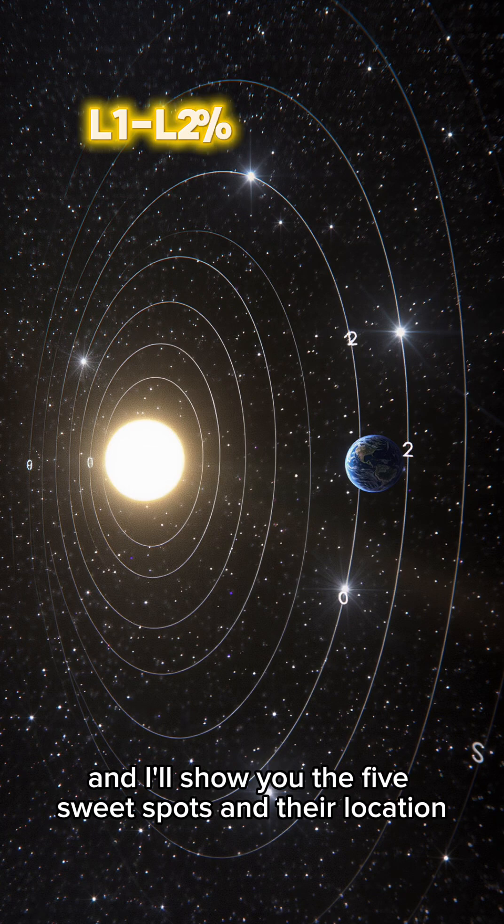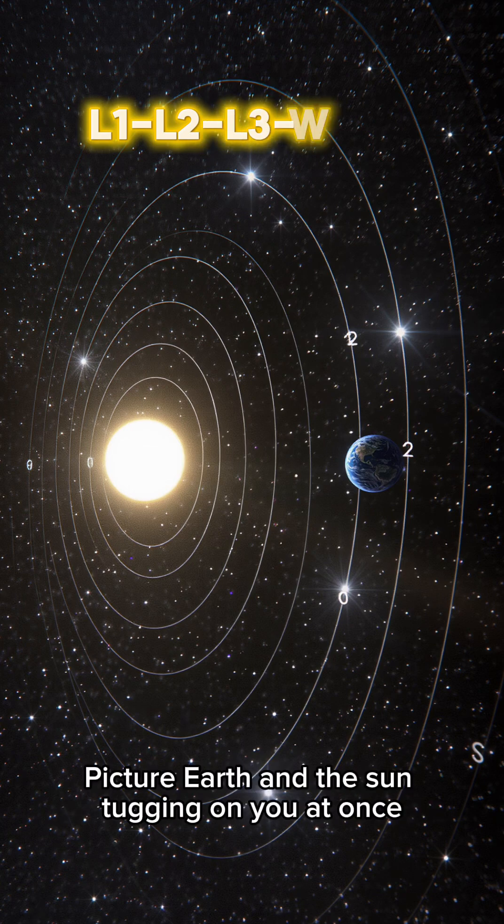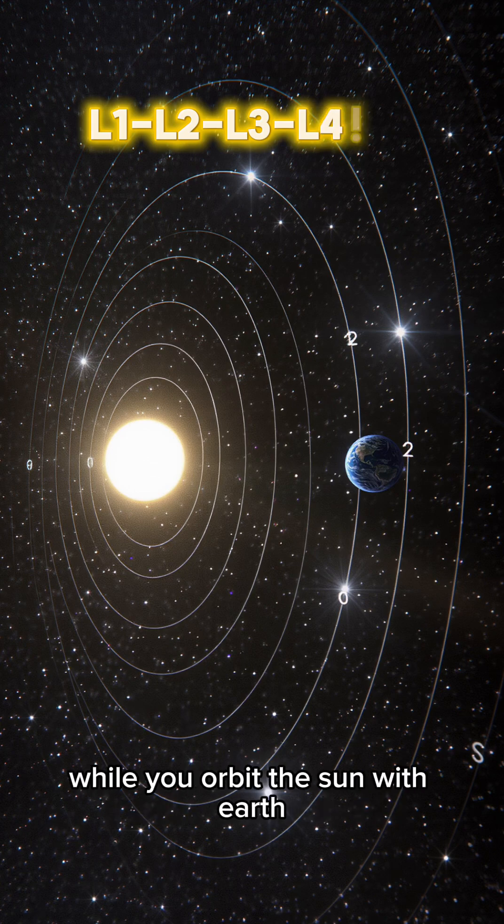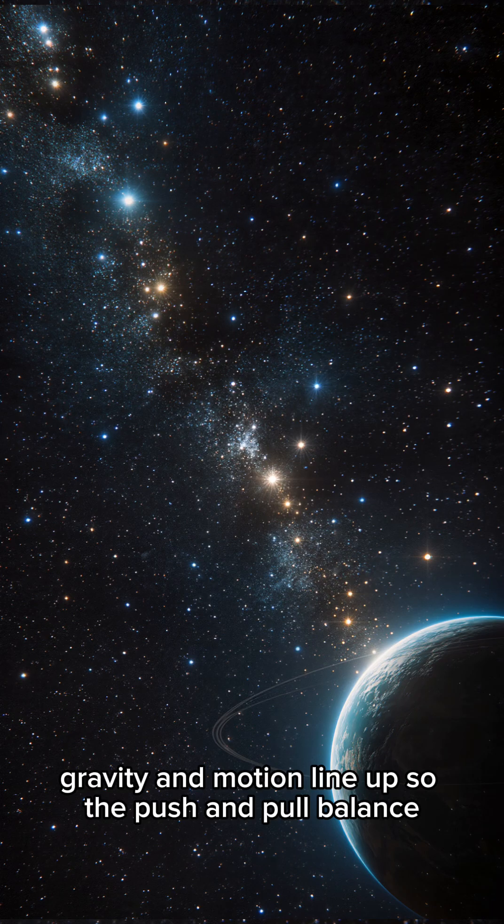Give me a minute, and I'll show you the five sweet spots and their location. Picture Earth and the Sun tugging on you at once while you orbit the Sun with Earth. At five specific places, gravity and motion line up so the push and pull balance.